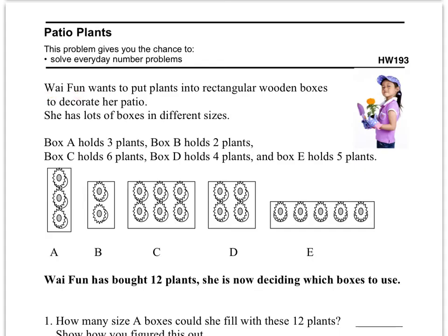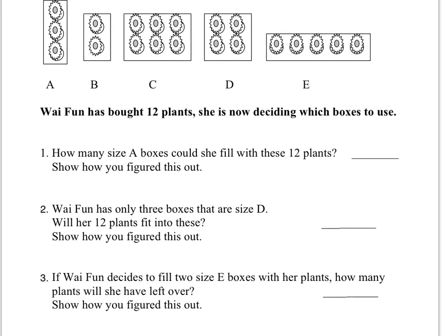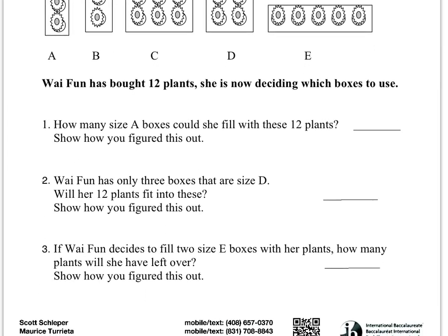Here it says we're on patio plants. Wai Fun wants to put plants into rectangular wooden boxes to decorate her patio. She has lots of boxes in different sizes. Box A holds 3 plants, Box B holds 2 plants, Box C holds 6 plants, Box D holds 4 plants, and Box E holds 5 plants. It says that Wai Fun has bought 12 plants. She is now deciding which boxes to use.